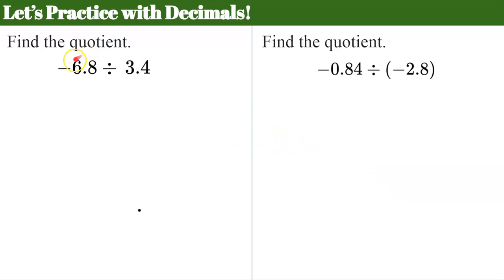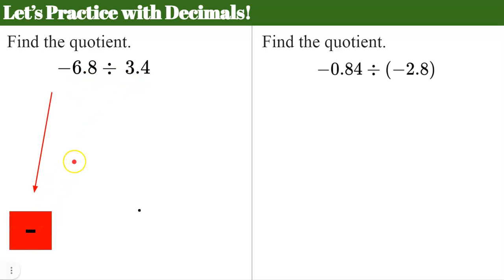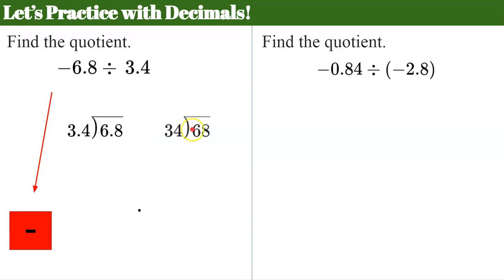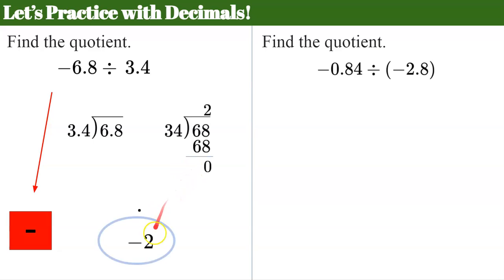Let's practice with decimals. We're going to do the same thing — make a plan. I have a negative divided by a positive — different signs — negative quotient. Now we're going to set up long division: 6.8 divided by 3.4. We need to move our decimal point to the right one so that we have a whole value, giving us 68 divided by 34. So 34 goes into 68 twice. 2 times 34 is 68, and I have 0 as a remainder. My answer to this problem is negative 2. Don't forget your negative sign.